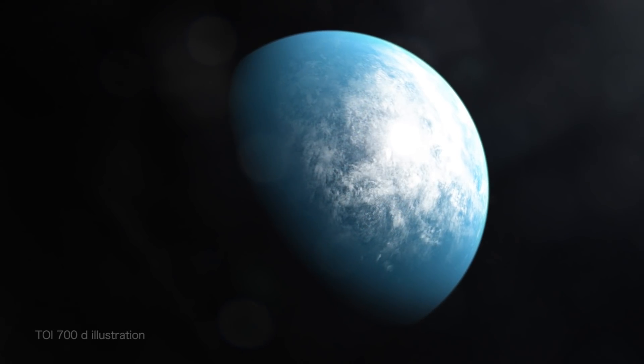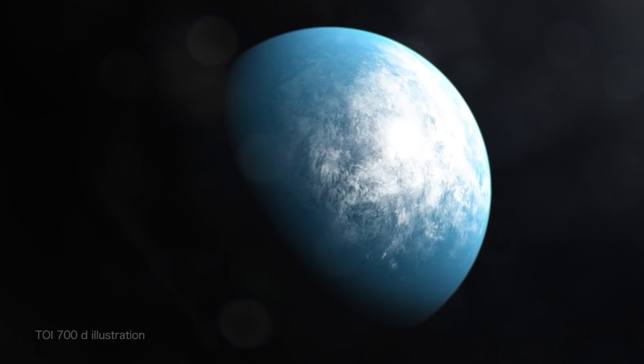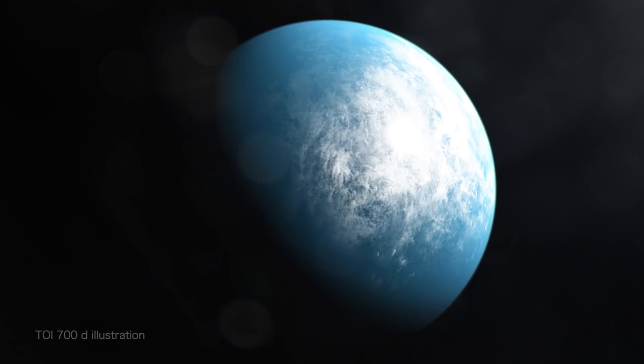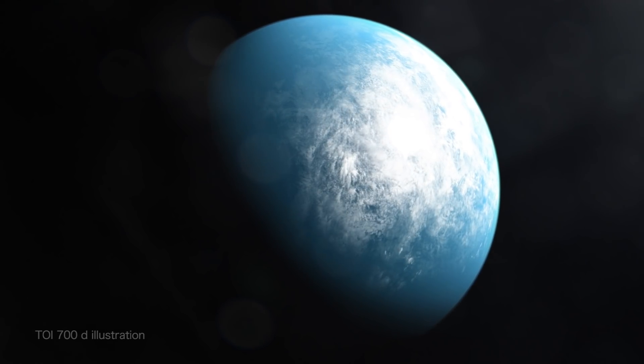NASA's TESS mission has found its first Earth-sized world in its star's habitable zone. This means the planet, called TOI-700d, has the potential for liquid water on its surface.